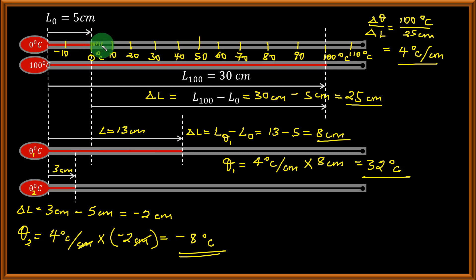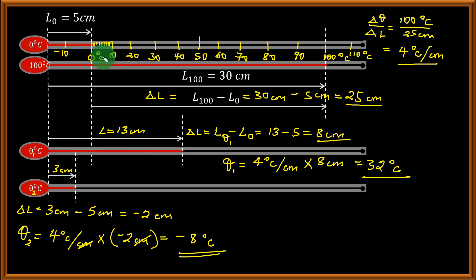Each of these smaller divisions will represent 1 degree Celsius. We repeat this process for each space, giving us 100 equal divisions between 0 and 100 degrees Celsius, meaning one division represents 1 degree Celsius. When all these marks have been placed on the stem of the thermometer, we will have done what is referred to as calibrating the thermometer.